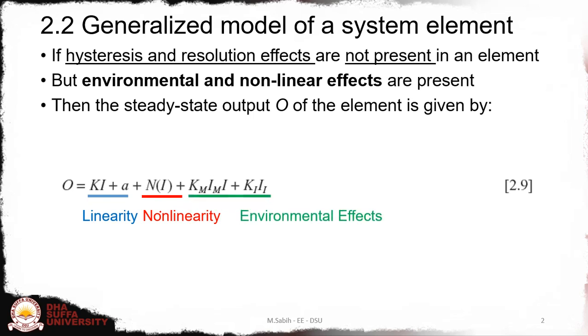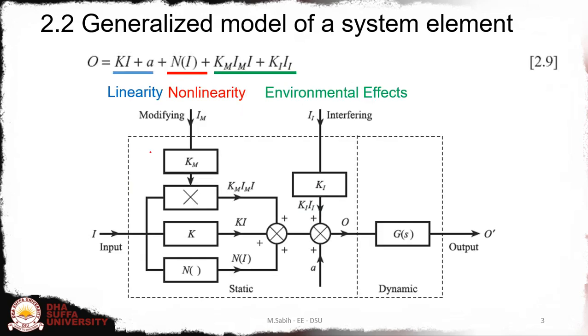Notice that in modifying input we also multiply with the input variable I, because in modifying input it changes the slope trend, while KI and II is just added as an offset because this will either move the curve above or below—this is an offset.